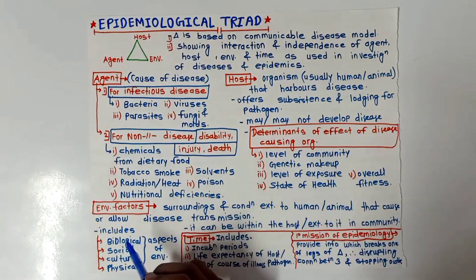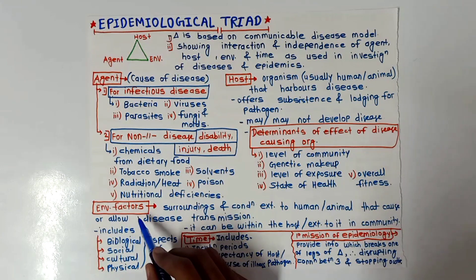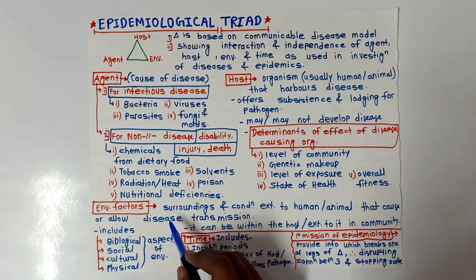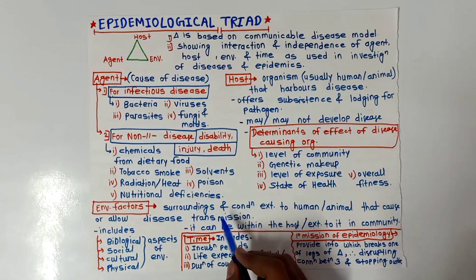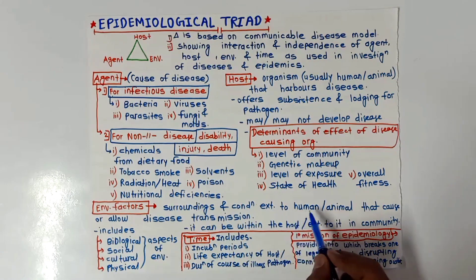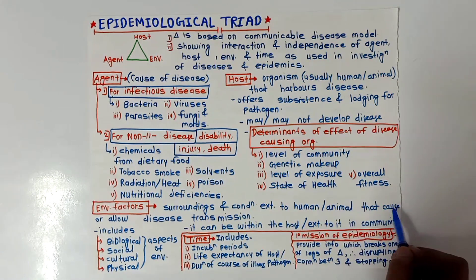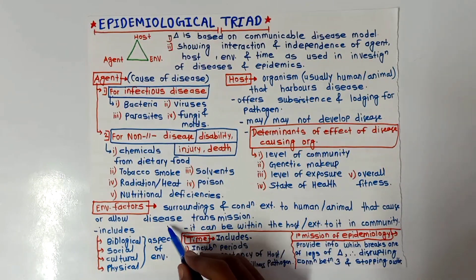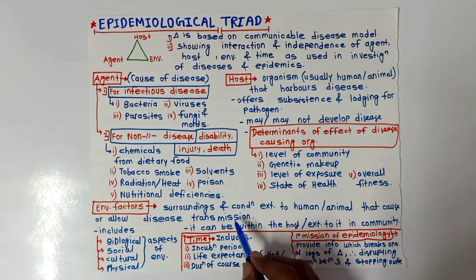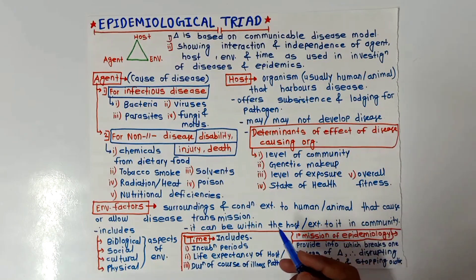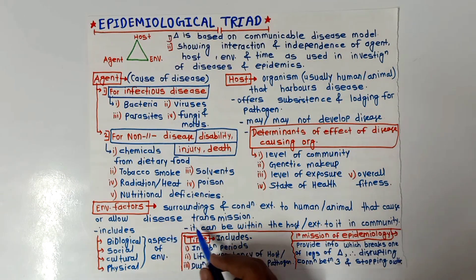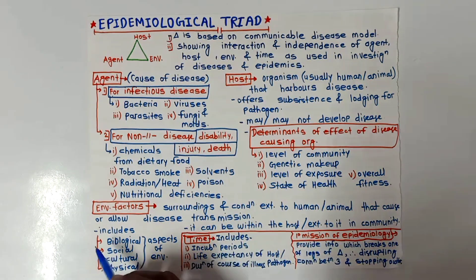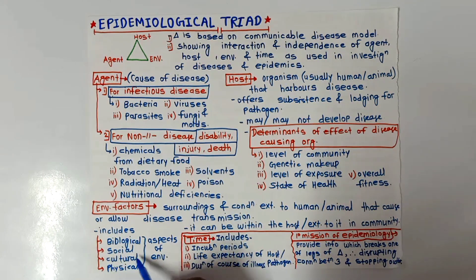Next are environmental factors. This refers to surroundings and conditions external to the human or animal that cause or allow disease or disease transmission. It includes biological aspects of the environment, as well as social, cultural, and physical aspects of the environment.